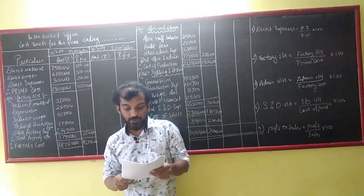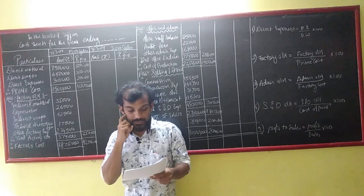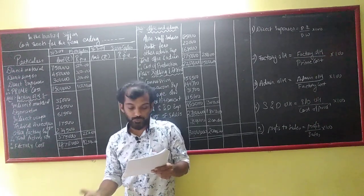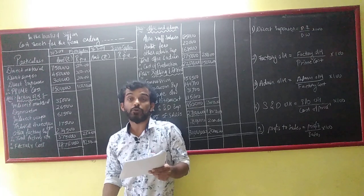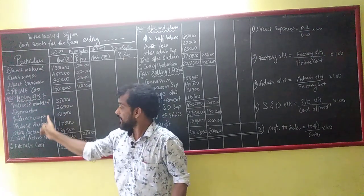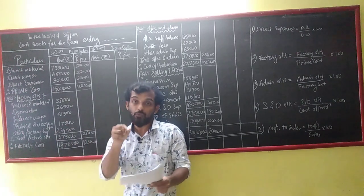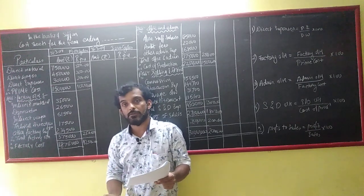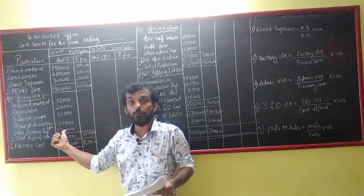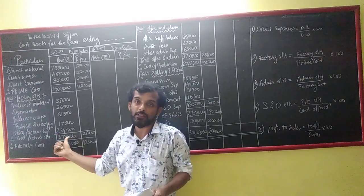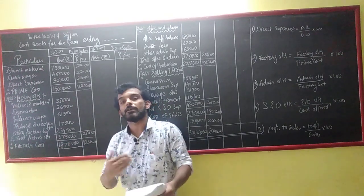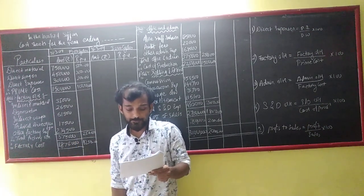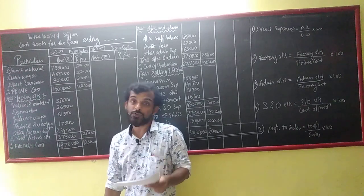Direct material cost per unit will rise by 50%. Direct wages per unit will increase by 25%. Direct expenses per unit will be in the same proportion to direct wages as in the previous year. Total factory overheads will be in the same proportion to the prime cost. Admin overheads in the same proportion to the works cost.